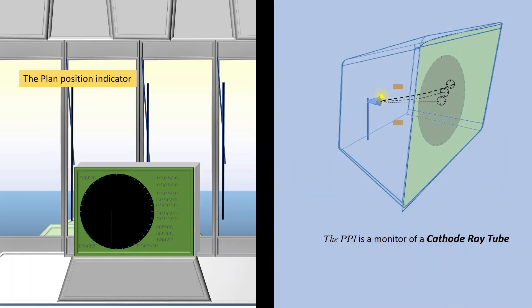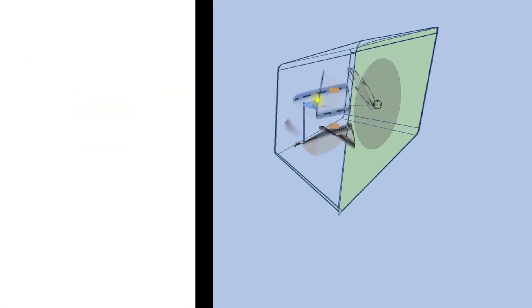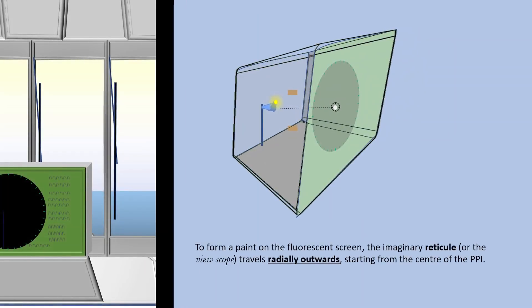Let us focus on the PPI. The PPI is a monitor of a cathode ray tube. To form a paint on the fluorescent screen, the imaginary reticule or the viewscope of the electron gun travels radially outwards, starting from the center of the PPI.